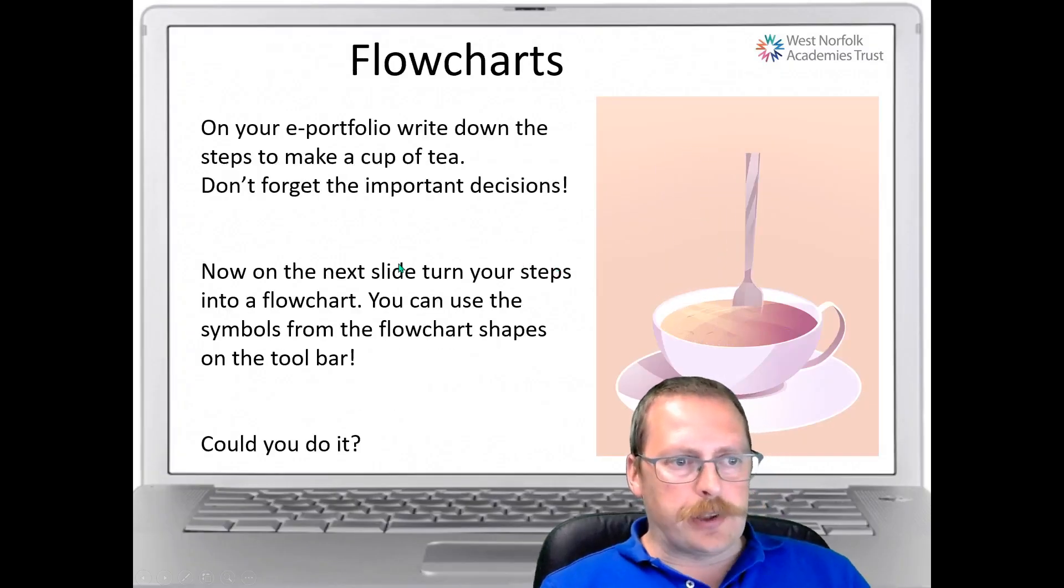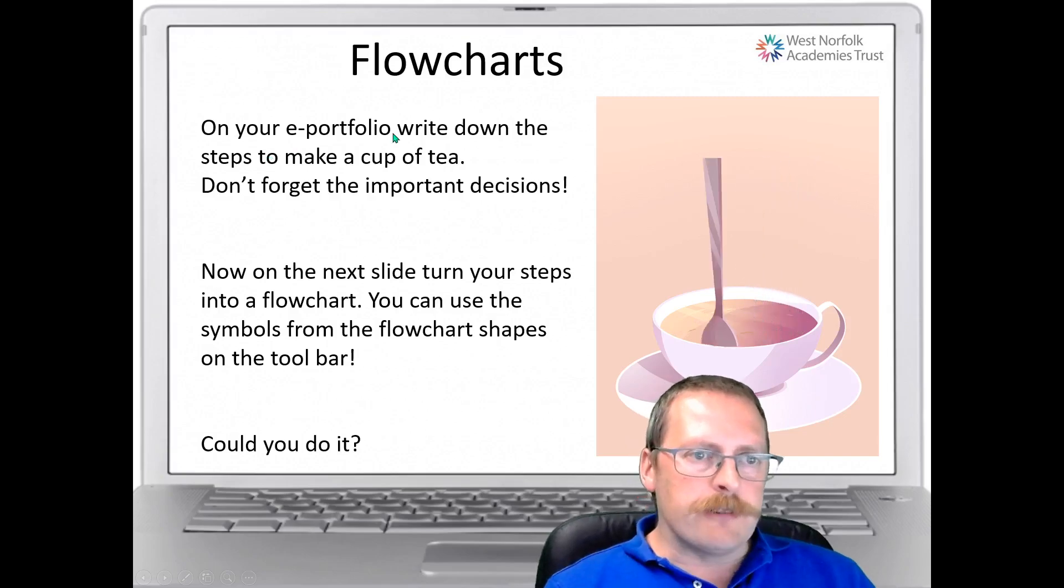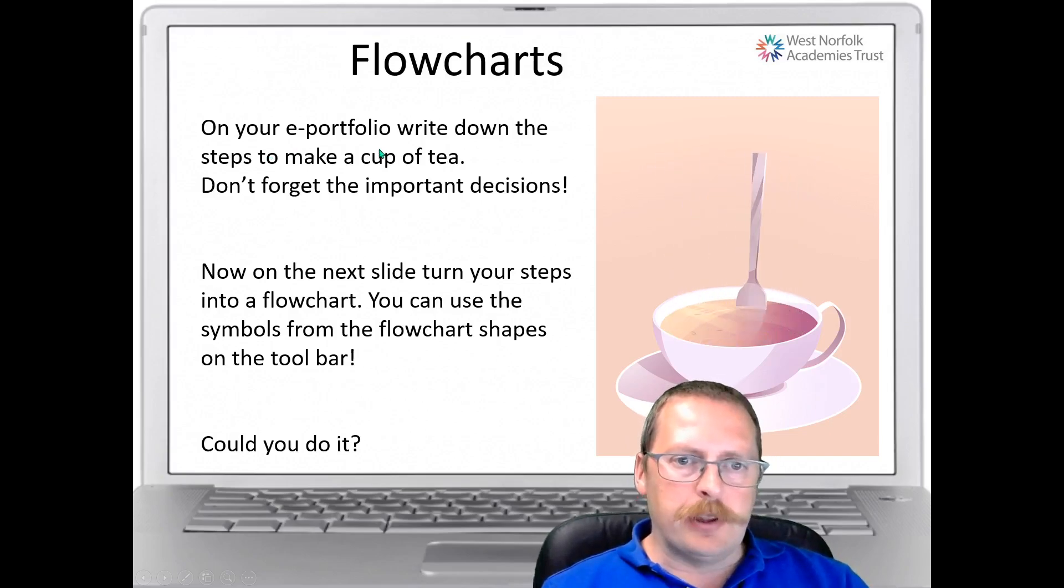So your next task. In your e-portfolio, you need to write down the steps of how you can make a cup of tea. Now, there are lots of decisions when making cups of tea and everybody drinks their cup of tea slightly differently. Some have sugar, some have milk and so on. So any of those decisions need to go into your flow diagram. Once you've written the instructions, you can create your flow diagram using the shapes and the symbols I showed you earlier.